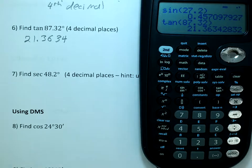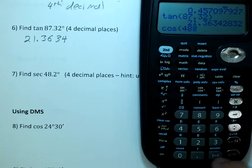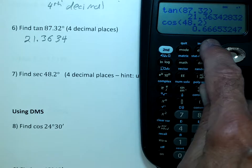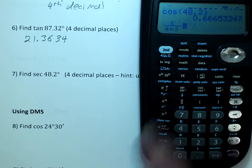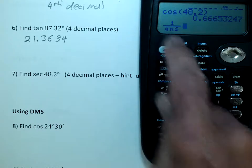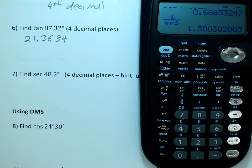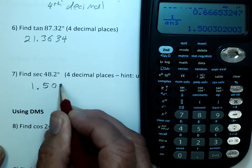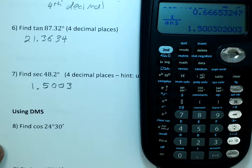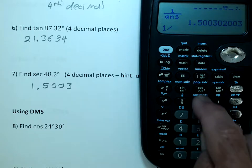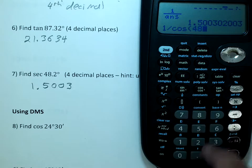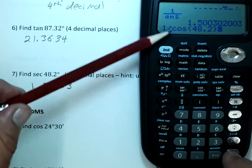Let's do that. Hit cosine, enter 48.2 degrees, and hit enter. But that's not the number we want — we want one over that. I can get there with the button that says one over x, which gives one over the previous answer. You could also do this in one step: just type one divided by cosine of 48.2. Same answer.